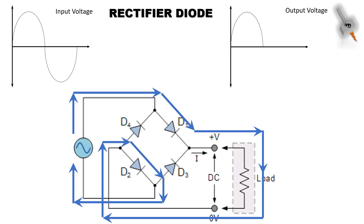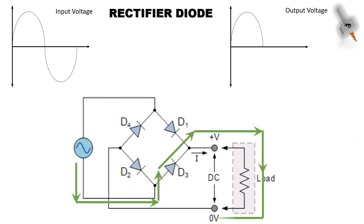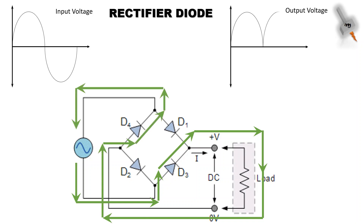For the negative half cycle, diodes D3 and D4 will conduct. Again, note the direction of the current in the load. So for the negative half cycle of the input AC voltage, the output voltage polarity is the same as the positive half cycle. This is how an AC input voltage is converted to DC output voltage using a rectifier diode.